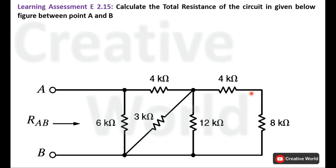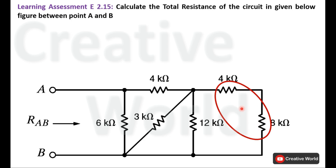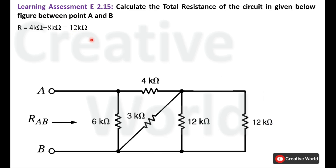We will start solving the circuit from this end and reduce the circuit up to 6 kilo ohm. If we observe, the 4 kilo ohm and 8 kilo ohm resistances are connected in series. So we can add these two together: 4 kilo ohm plus 8 kilo ohm equals 12 kilo ohm. These two resistances can be replaced with this single 12 kilo ohm resistance, so we modify the circuit accordingly.